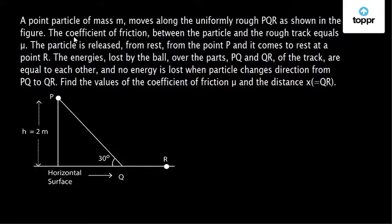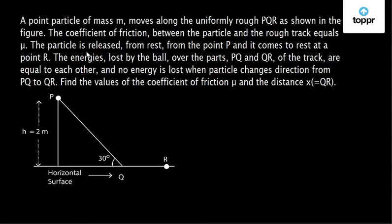Let us discuss a question on work and energy from JEE Mains 2016. A point particle of mass M moves along the uniformly rough track PQR as shown in the figure. The coefficient of friction between the particle and the rough track equals mu. The particle is released from rest at point P and comes to rest at point R. Find the values of the coefficient of friction mu and the distance x equal to QR.